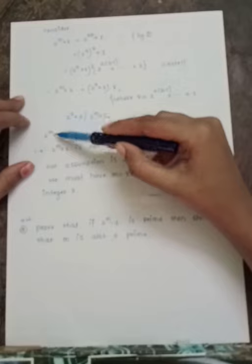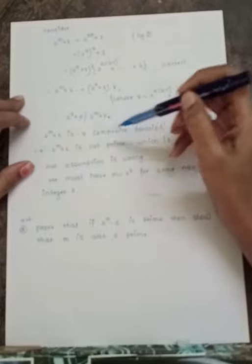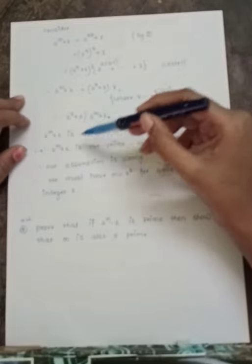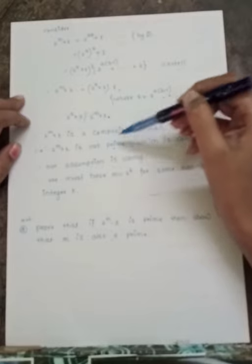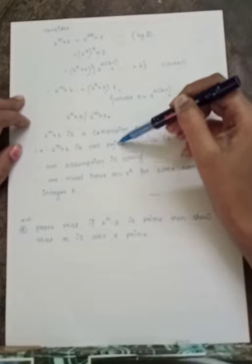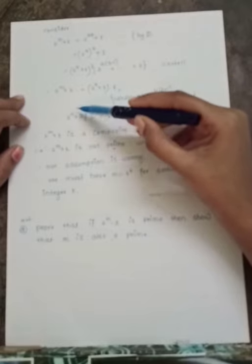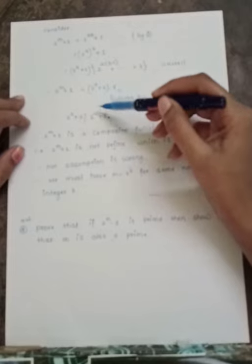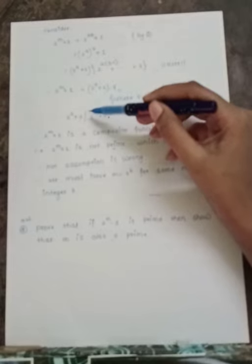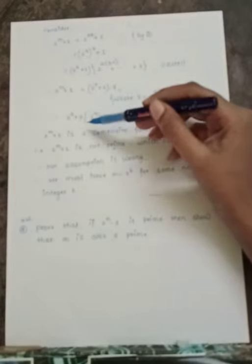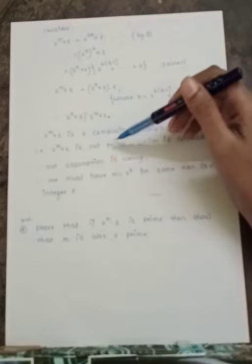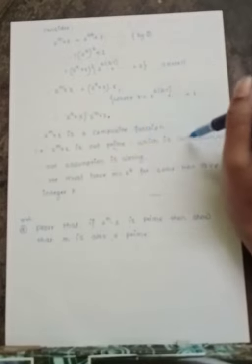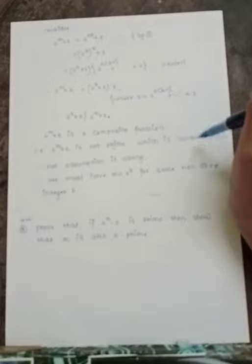Therefore (2^a + 1) divides (2^m + 1). Therefore 2^m + 1 is composite — that is, 2^m + 1 is not prime. But this contradicts our assumption that 2^m + 1 is prime.